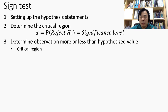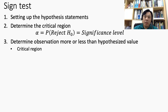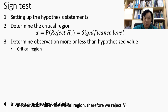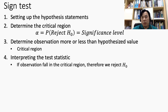Once we determine the critical region, we look at our data observations and count how many data points are above and how many are below the hypothesized value, using the plus and minus signs. From here, we check whether these data observations fall in the critical region — if they do, then we reject the null hypothesis. That is how we carry out the sign test.